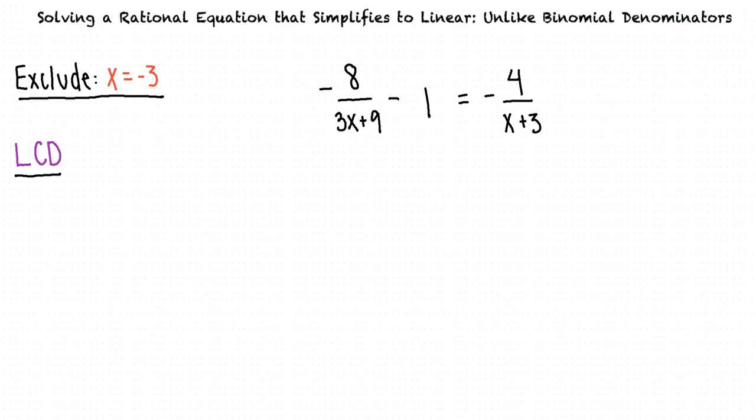The denominator 3x plus 9 has factors of 3 and x plus 3. The denominator x plus 3 only has the factor x plus 3. Okay, so we use the factor x plus 3 once, and the factor 3 once, to determine a least common denominator of 3 times x plus 3. Exactly. Now we multiply both sides of the equation by 3 times x plus 3.